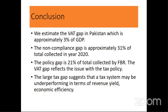In conclusion, our estimated results suggest the VAT gap is roughly 3% of GDP — $8.6 billion total. Of this, $5.1 billion is caused by the compliance gap and $3.6 to 3.8 billion by the policy gap. The total $8.6 billion is 3.3% of total GDP foregone due to non-compliance behavior and policy decisions. The non-compliance gap is approximately 31% of total VAT collected in 2020, and the policy gap is 21% of total VAT collected by FBR. These gaps reflect issues with tax policy, and the large tax gap suggests the system may be underperforming in revenue yield and creating distortions in the economy. Thank you.